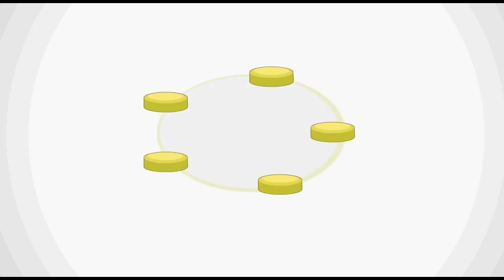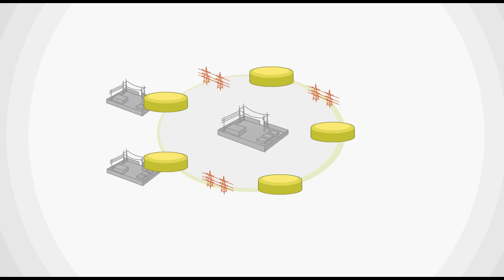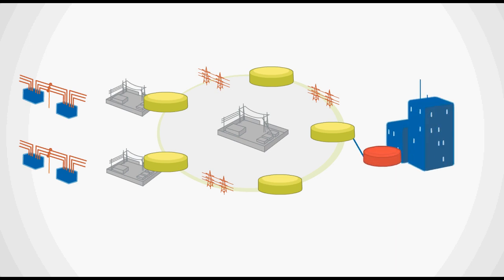Telecom equipment will be installed along the transmission lines in each substation, and even in parts of the distribution network. In the dispatching center, you'd find the different applications connected via local network infrastructure to the network nodes in the grid.